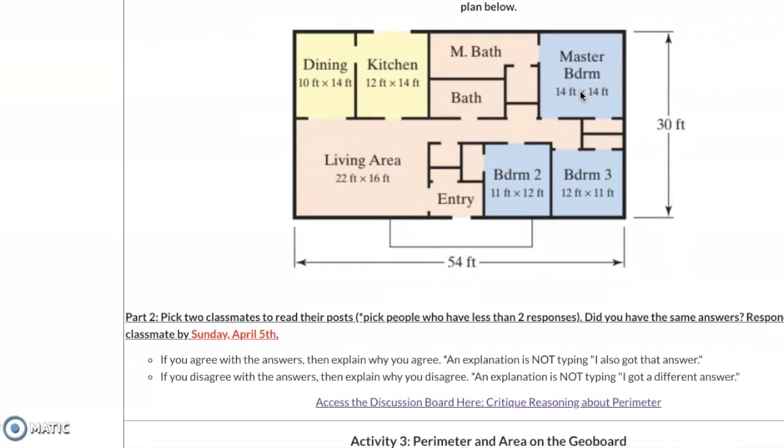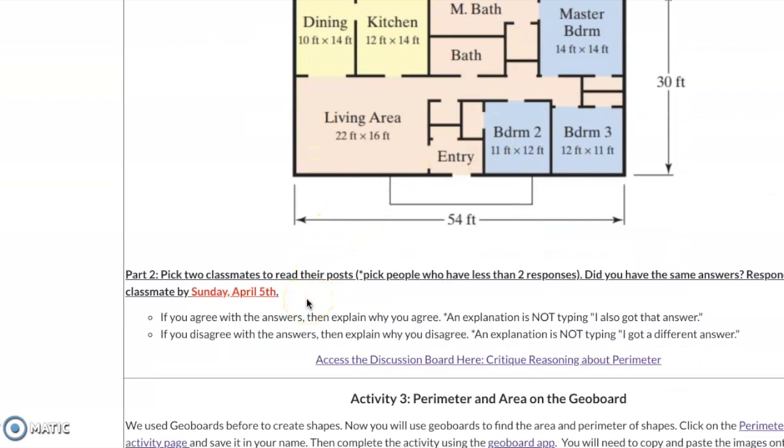Then by Sunday you're going to have to pick two of your classmates to respond to their answers. This is a way for me to get you to have some opportunity to collaborate with different people in the class. So whenever you post and let's say you agree with somebody don't just say I also got that answer because that's not going to tell anybody how you were thinking about the problem. You may have gotten the same answer but approached the problem in a different way. So it's important to talk about how you approach the problem.